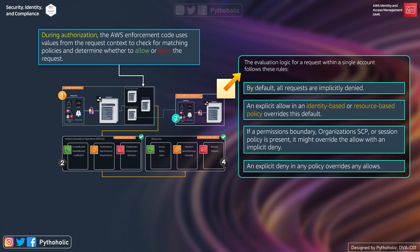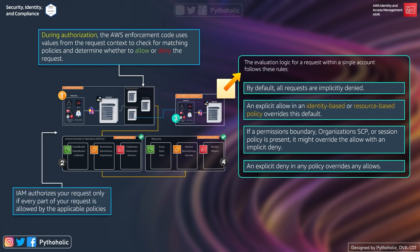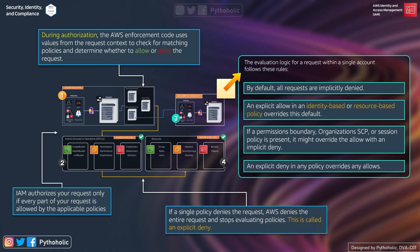During authorization, the AWS enforcement code uses values from the request context to check for matching policies and determines whether to allow or deny the request. IAM authorizes your request only if every part of it is allowed by the applicable policies. If a single policy denies the request, AWS denies the entire request and stops evaluating — this is called an explicit deny. So remember: implicit deny means no explicit allow exists; explicit deny means access is actively refused.